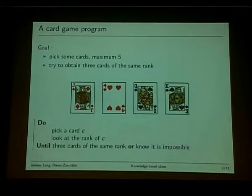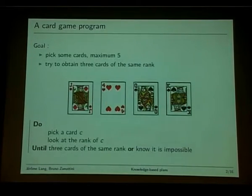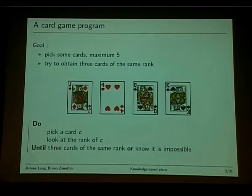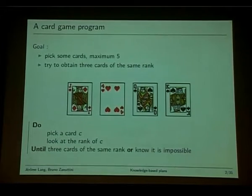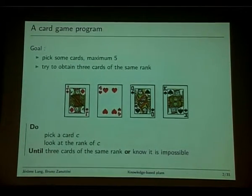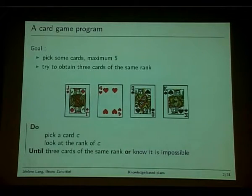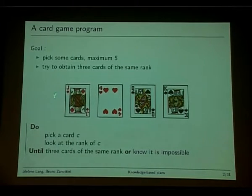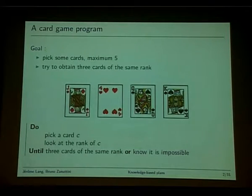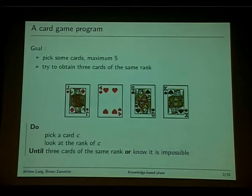Let's start with two simple examples. The first example is a card game. We want to build a single-agent card game program, and the goal is to obtain three cards of the same rank. We can pick a maximum of five cards. Suppose the first four cards picked are these ones — is it still possible to reach the goal? Yes, it is still possible. We could write a knowledge-based program that picks a card, looks at the rank, and does that until three cards of the same rank have been picked, or until we know it has become impossible to obtain the goal.